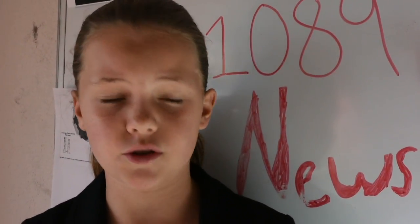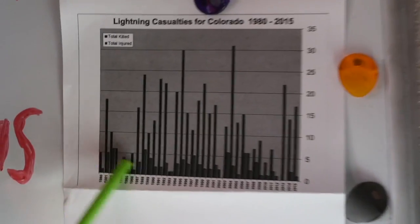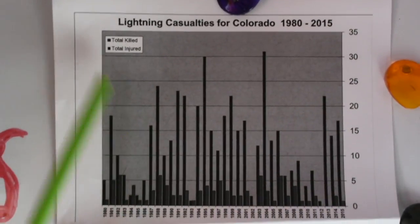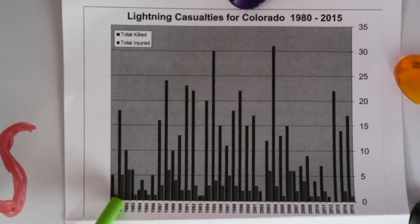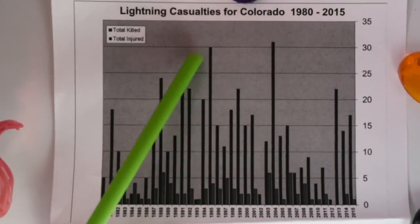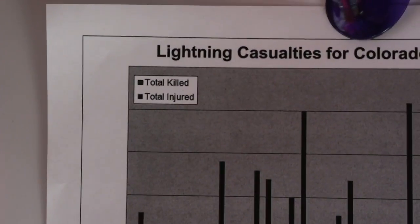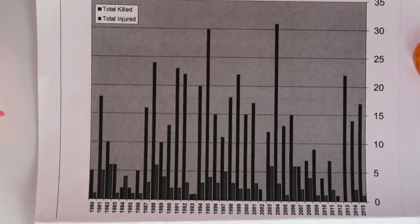Now I have some lightning graphs, pictures, and maps for you. Unfortunately lightning kills or injures more people than tornadoes or hurricanes. These smaller bars at the bottom are the total amount of people killed from 1980 ranging up to 2015. These larger bars are all the people who have been injured and not killed. And that's just in Colorado.